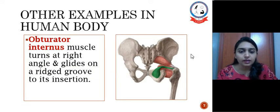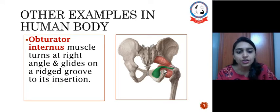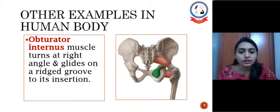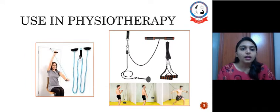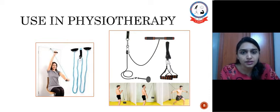Next example in the human body is obturator internus muscle where it takes a right turn or we can say it turns at a right angle and glides on a rigid groove to its insertion on the femur. So this way it gives more advantageous insertion to the muscle. The use of pulley in physiotherapy is in various active assisted exercises as well as resisted exercises.